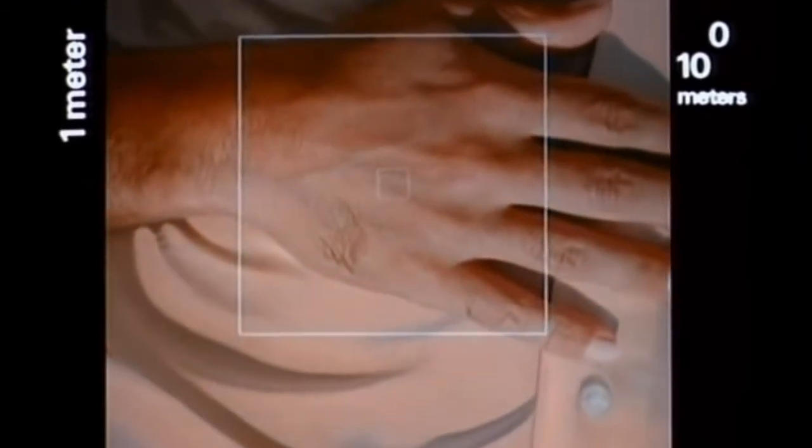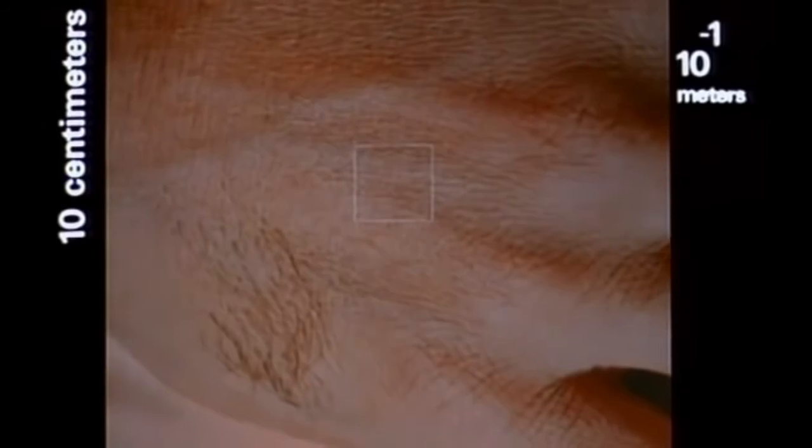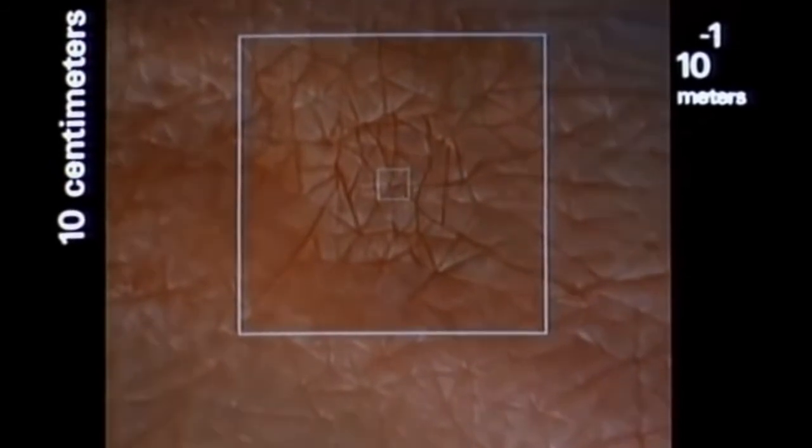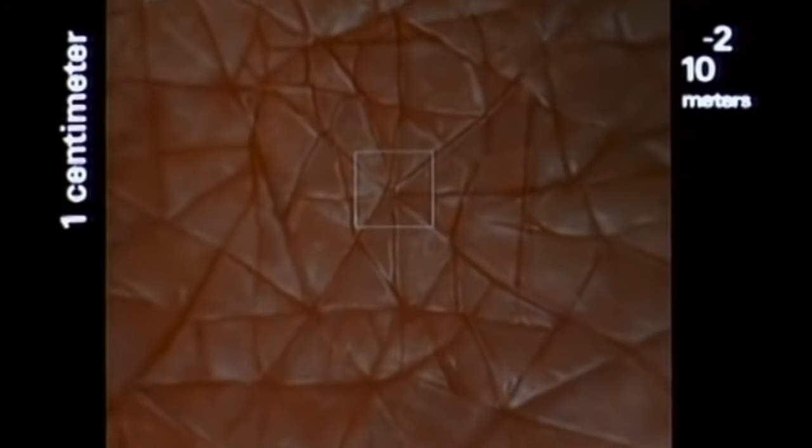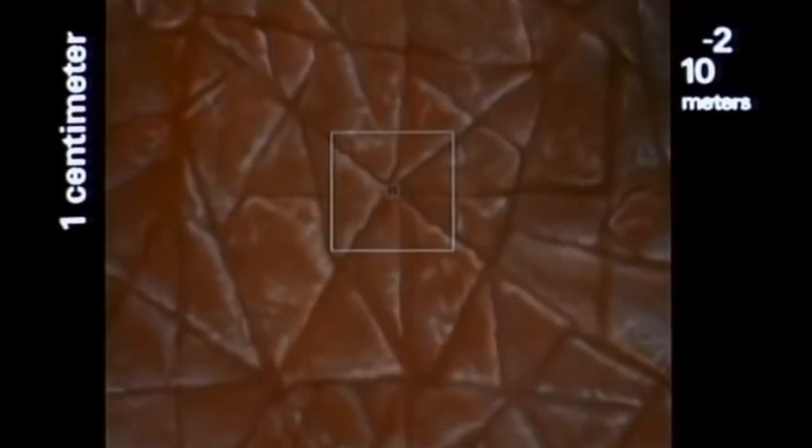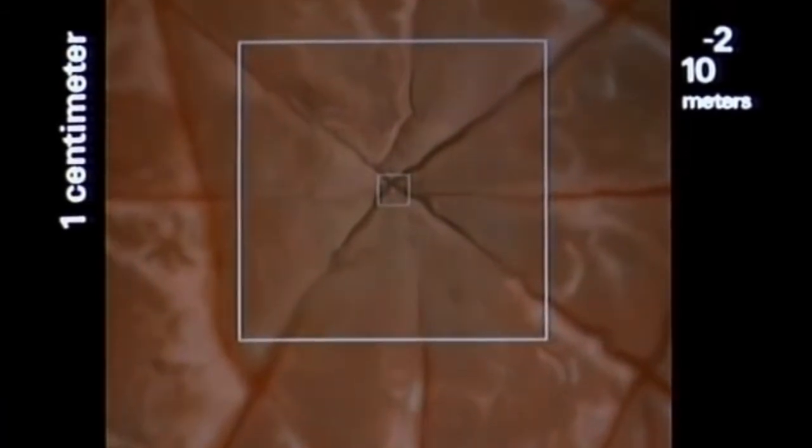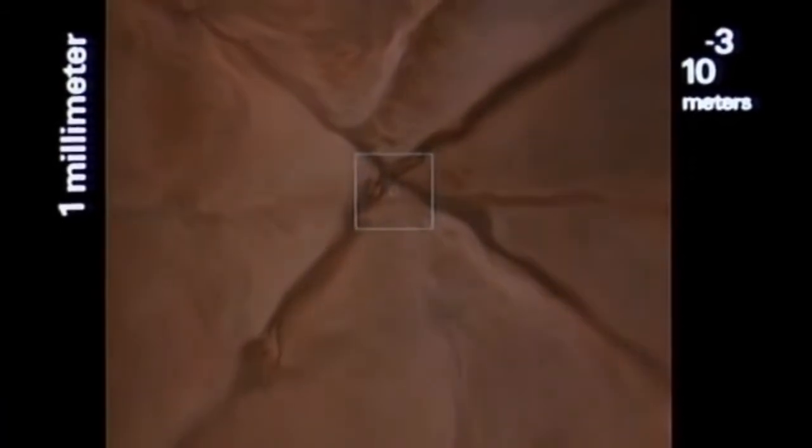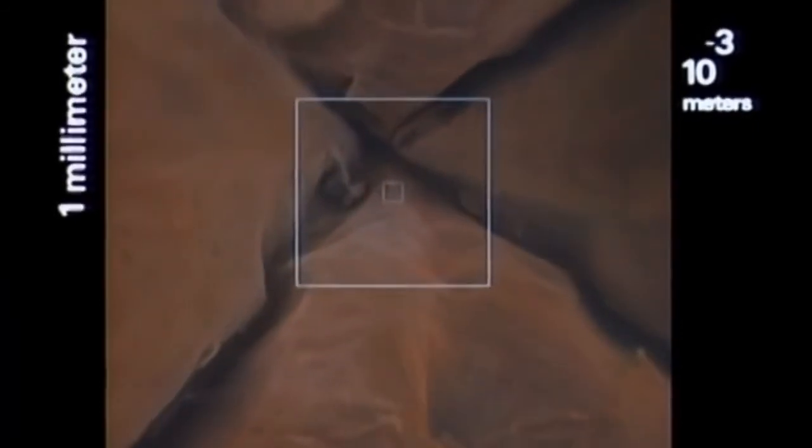Now we reduce the distance to our final destination by 90% every ten seconds. Each step much smaller than the one before. At ten to the minus two, one one-hundredth of a meter, one centimeter, we approach the surface of the hand. In a few seconds, we'll be entering the skin. Crossing layer after layer from the outermost dead cells into a tiny blood vessel within.